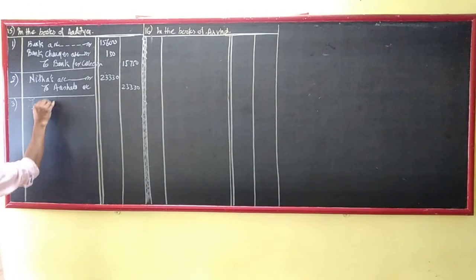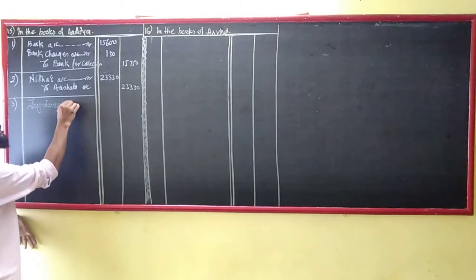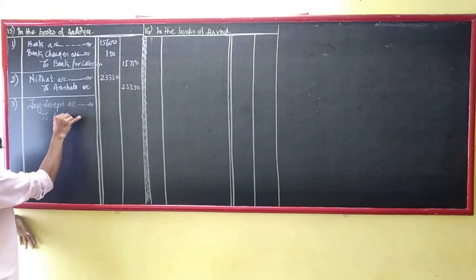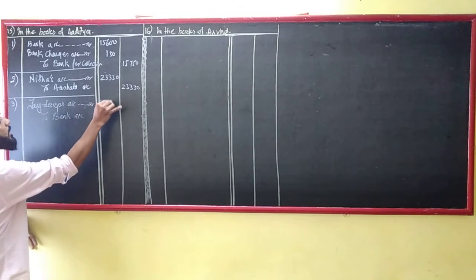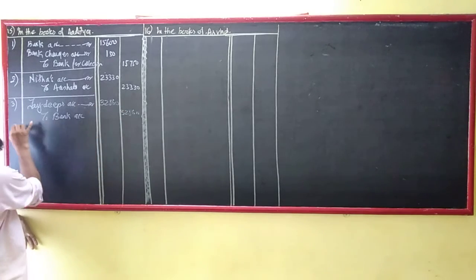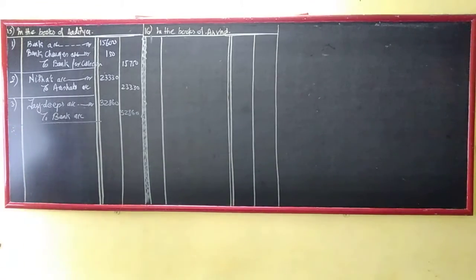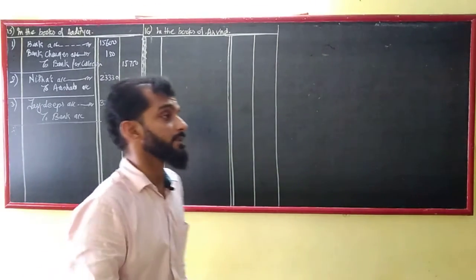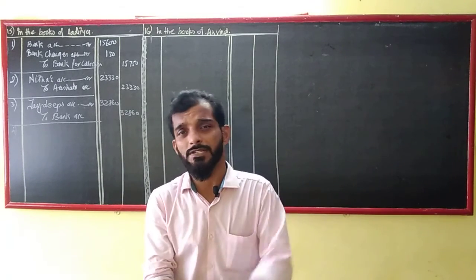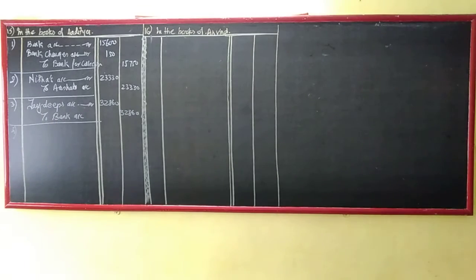Let me read the transaction's entry. Jayadip's account debit to bank 32,860. I hope the entry is clear. Being Jayadip's acceptance discounted bill dishonored and noting charges paid. Okay? You are free to write your own narrations, but it should be perfect.